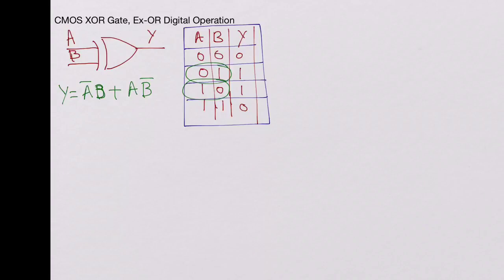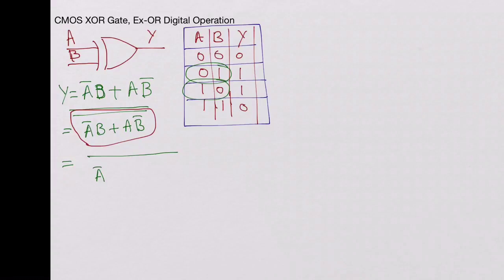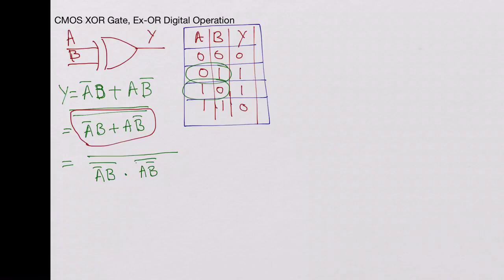Now let's try to simplify it and construct it using gates — an exclusive OR using gates. This Y can further be written by putting two inversions on A-bar·B plus A·B-bar. Taking the part with one inversion, you have one inversion at the top which remains, then it becomes (A-bar·B) whole bar — that's not an OR but an AND — giving (A-bar·B)-bar AND (A·B-bar)-bar. So let's construct this using gates.